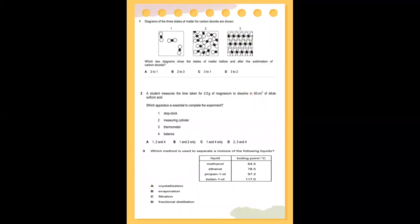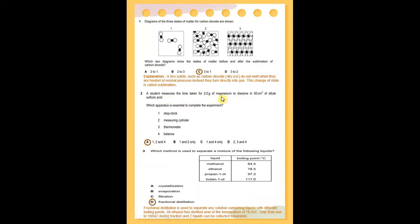Question number one. The diagram of the three states of matter for carbon dioxide are shown: number one, number two, and number three. Which two diagrams show the state of matter before and after the sublimation of carbon dioxide? A few solids such as carbon dioxide — dry ice — do not melt when heated at normal pressure. Instead, they turn directly into gas. This change of state is called sublimation. So, from diagram three it becomes diagram one: from solid, it turns into gas.